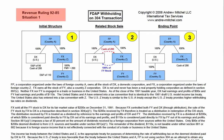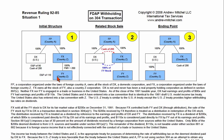In Revenue Ruling 92-85, Situation 1, a foreign parent corporation owned 100% of a U.S. domestic corporation DX. The foreign parent also owned 100% of a foreign corporation FX, and FX in turn owned 100% of foreign corporation FY.